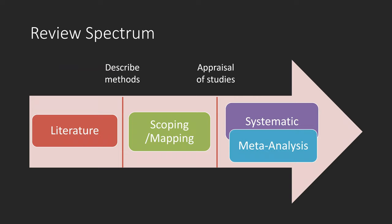The big idea I wish to deliver here is the rigor in different review types. For literature reviews, as we mentioned earlier, they are good enough as an introduction to a study or separate work, but they never describe their methods. When getting into scoping or mapping reviews, you need to describe your methods. And then for systematic reviews, you need to do an appraisal of studies.